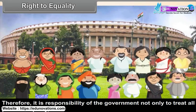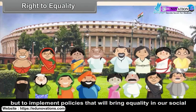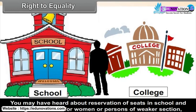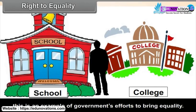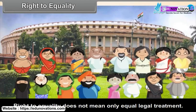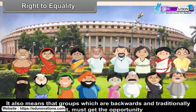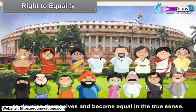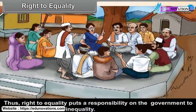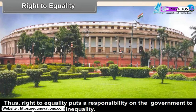Therefore, it is the responsibility of the government not only to treat all persons equally, but to implement policies that will bring equality in our social relations. You may have heard about reservation of seats in school and college admissions for women or persons of weaker sections — this is an example of government's efforts to bring equality. Right to equality also means that groups which are backward and traditionally discriminated against must get the opportunity to develop themselves and become equal in the true sense. Thus, right to equality puts a responsibility on the government to remove injustice and inequality.